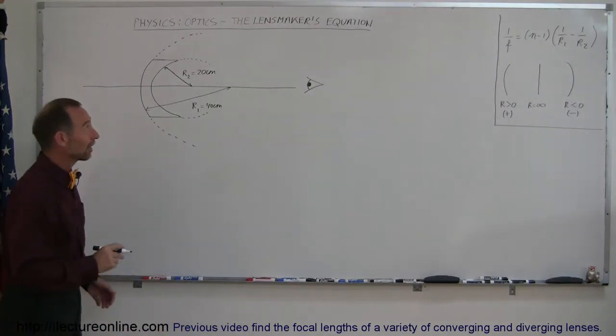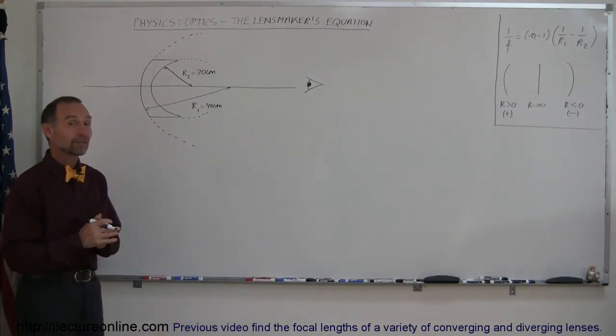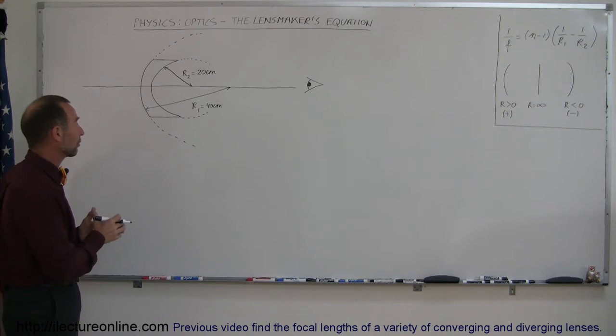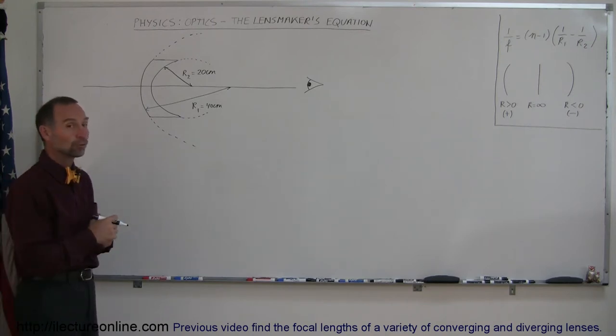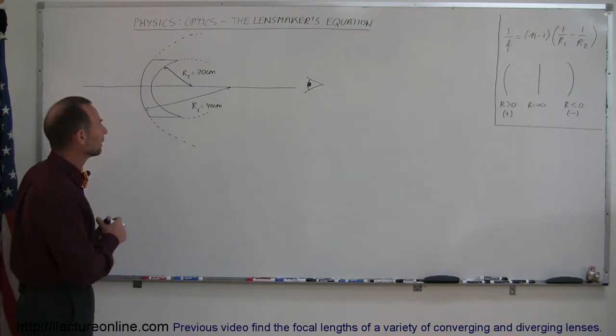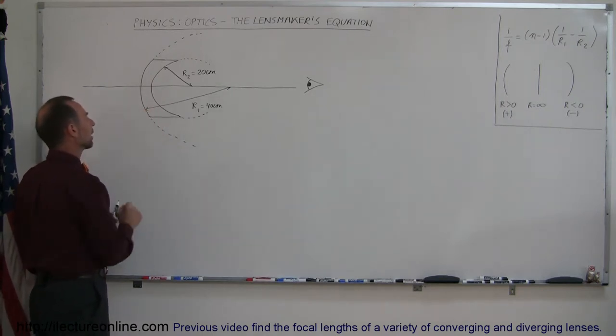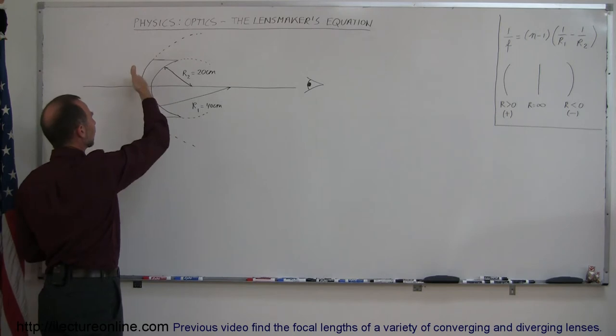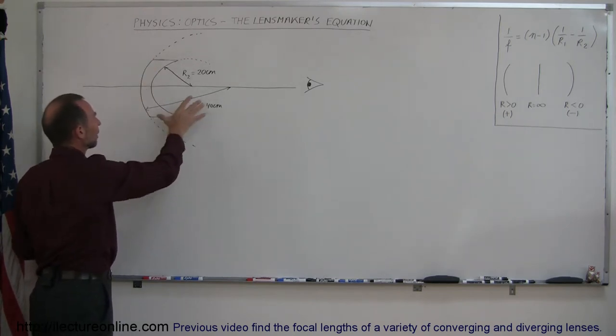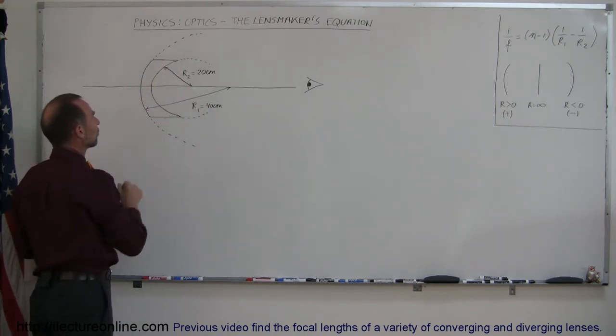And for the last example on how to use a lens maker's equation to find the focal length of a lens, we're now taking a lens that's actually a very common lens, a lens that we use for people who are nearsighted, people who need to be able to see far away. They typically use a lens like this, where the first radius of curvature is large and the second one is small.